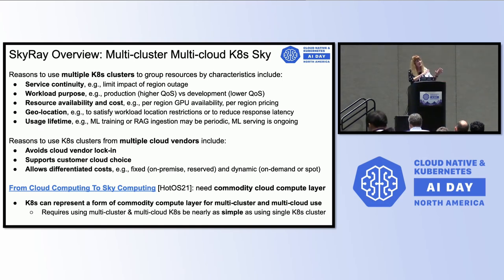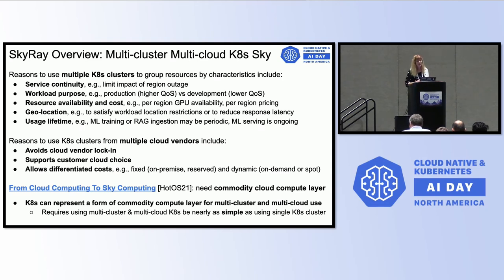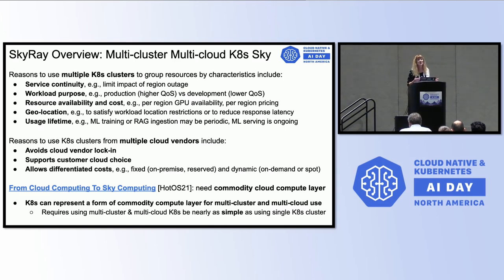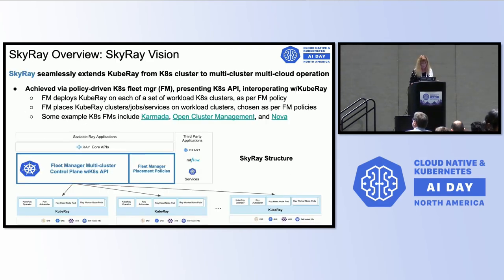Thinking about multiple clusters and multiple clouds brings in the idea of sky computing, which was described in a recent paper from Berkeley, talking about what's needed to make sky computing happen. One of the key things is a commodity cloud compute layer. You could argue that Kubernetes is a commodity cloud compute layer, but for that to really be credible, it needs to be almost as easy to use multiple clusters as it is to use one cluster.